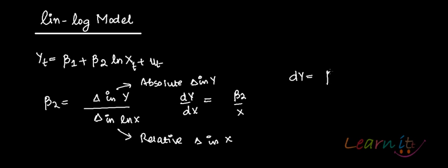dy is basically beta 2 divided by x, times dx. Now if I want to find out the absolute change in y for a percentage change in x, I'll be multiplying this beta by 0.01 units — in other words, you will be dividing this beta by 100 units.